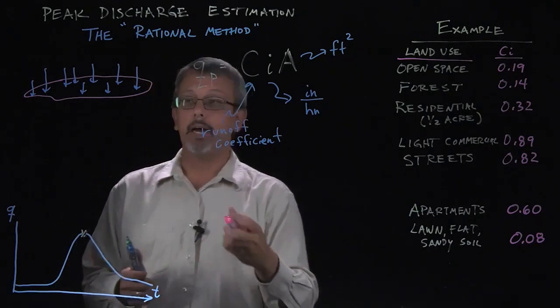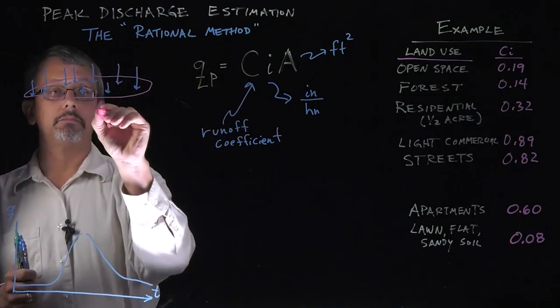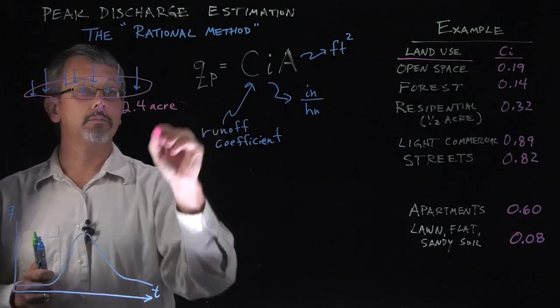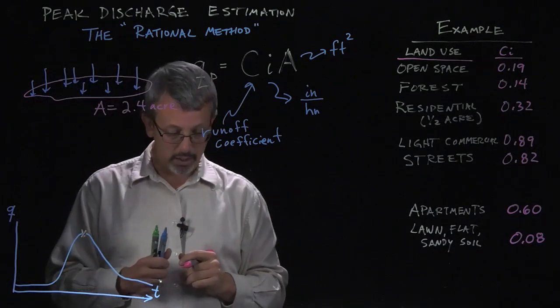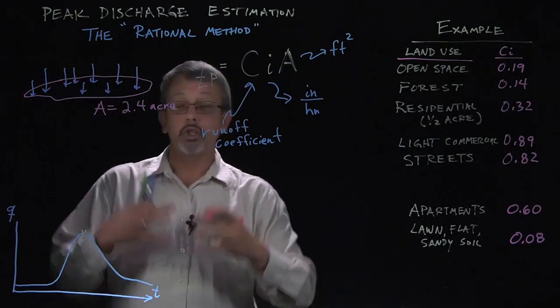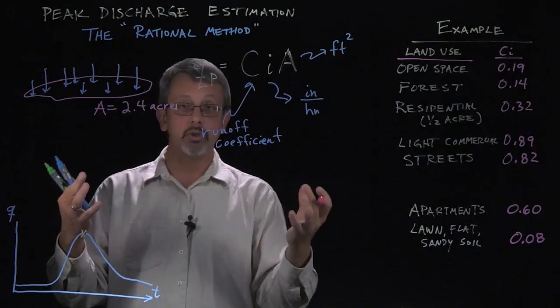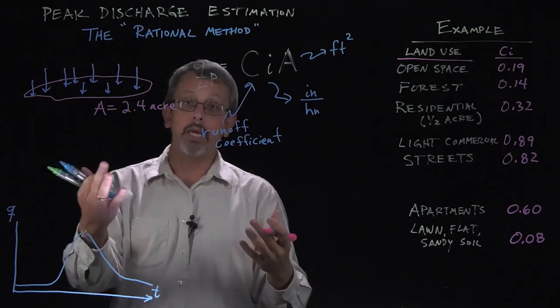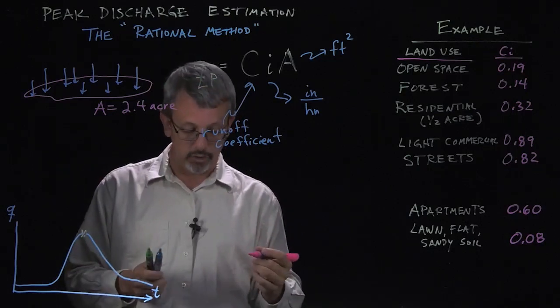For example, let's say we had a plot of land that has an area of 2.4 acres. We have some sort of 2.4 acre plot of land. And a storm comes through, we'll call it a 25-year storm, something we assume every 25 years comes through. A storm comes through and we'd like to know what our peak runoff is going to come from this 25-year storm.